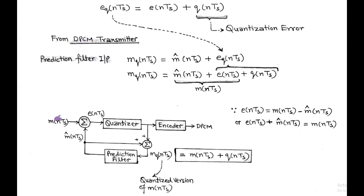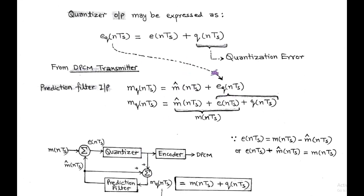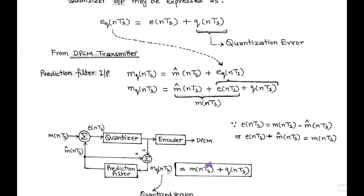At the transmitter side, focusing on the prediction filter: the quantized version M_Q is the input of the prediction filter and produces the predictive value M-hat(NTS). The input M_Q(NTS) equals M-hat(NTS) plus E_Q(NTS). Substituting E_Q as E(NTS) plus Q(NTS) — that is, prediction error and quantization error — the first two terms M-hat(NTS) plus E(NTS) equal M(NTS). Therefore, the quantized version M_Q(NTS) equals M(NTS) plus Q(NTS).